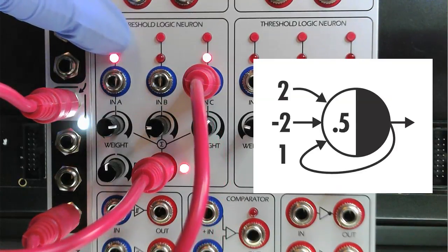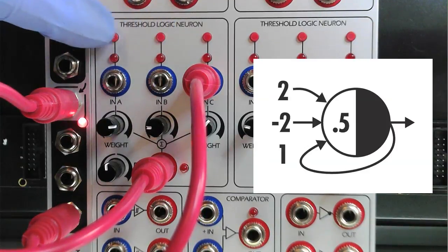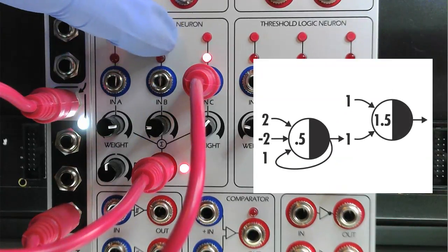Stacking neurons in this configuration will create a delay of N time periods. To create a latch, we can take one of our single-bit memory circuits and send its output to a second neuron.